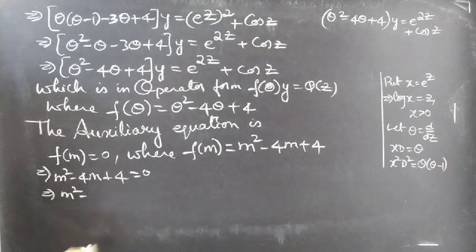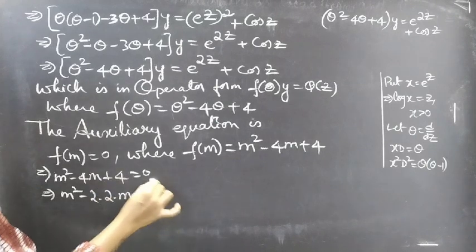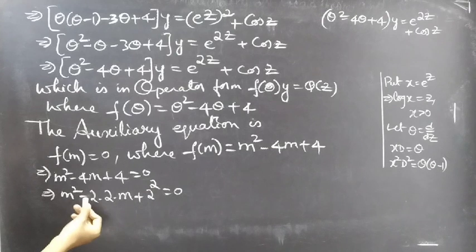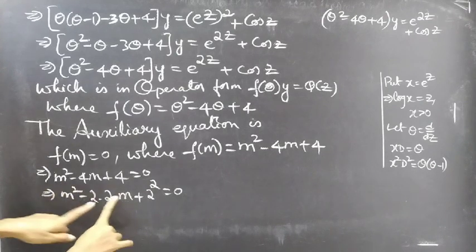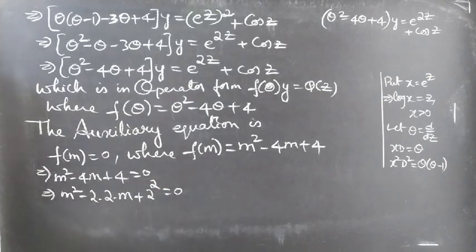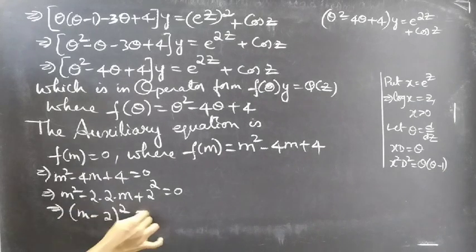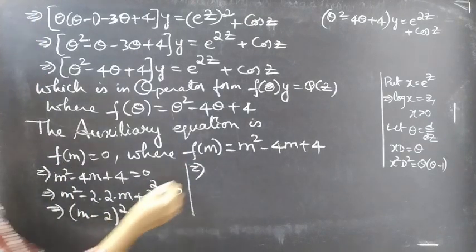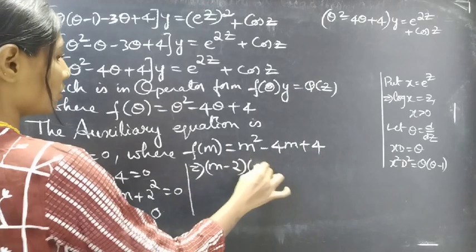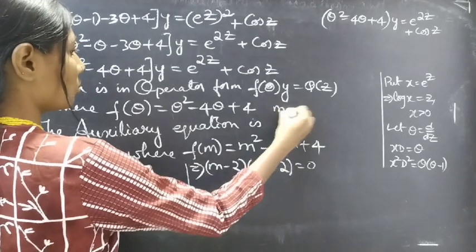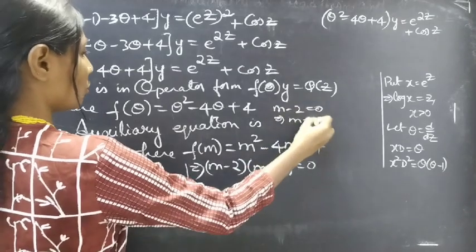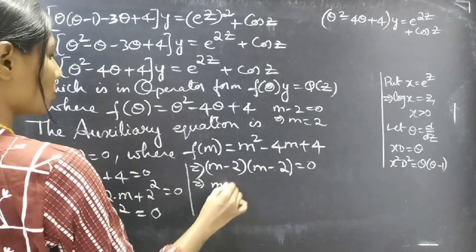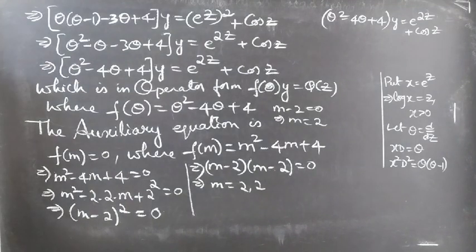We can write minus 4m as minus 2·2·m, and 4 as 2². So this is of the form a² minus 2ab plus b² equals 0, which is (a minus b)² form. Writing it as (m minus 2)² equals 0, or (m minus 2)(m minus 2) equals 0. Equating each factor to zero, m equals 2 twice. The roots are real and equal: m₁ equals m₂ equals 2.